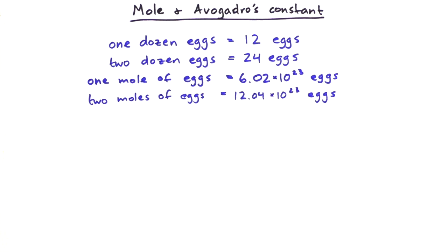We don't really use moles when counting things like eggs because there's no way we'd have that many eggs. We usually use it when we're talking about atoms or molecules instead.